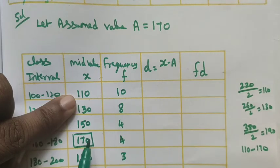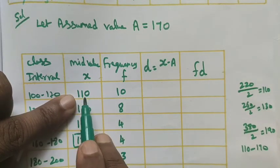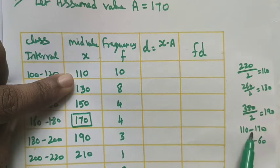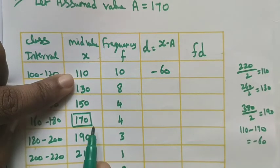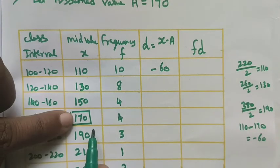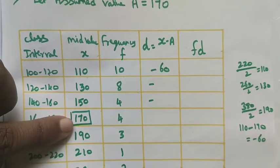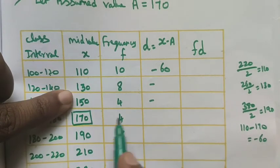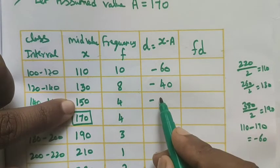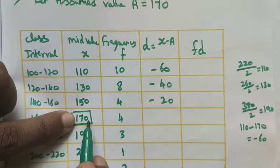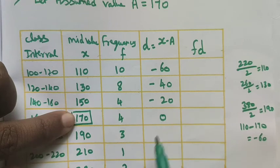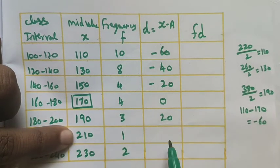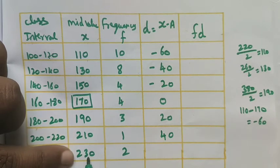Now compute d = x - a for each row. With a = 170: 110 - 170 = -60, 130 - 170 = -40, 150 - 170 = -20, 170 - 170 = 0, 190 - 170 = 20, 210 - 170 = 40, 230 - 170 = 60. Values above the middle term are negative and below are positive.